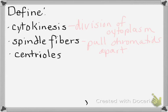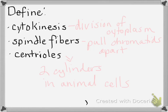Centrioles look like two little cylinders and always hang out together. What kinds of cells have centrioles — plant or animal? Animal cells have centrioles. We already covered chromatid, centromere, chromatin, and chromosomes.